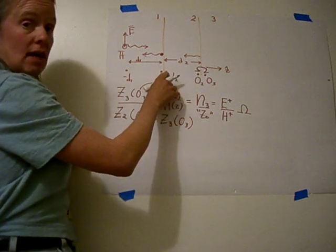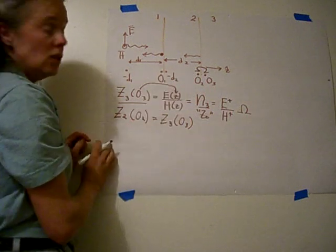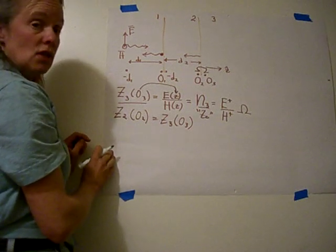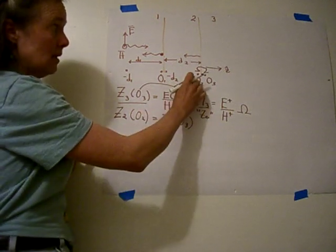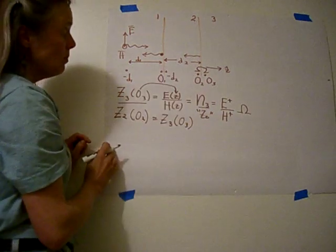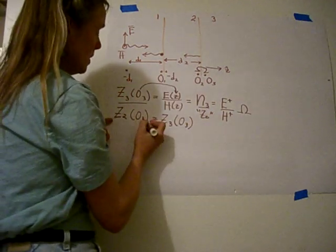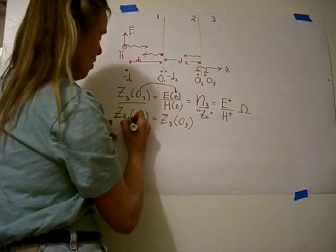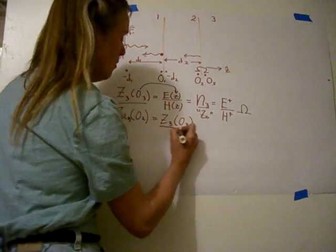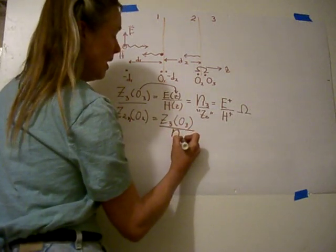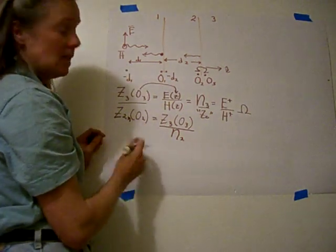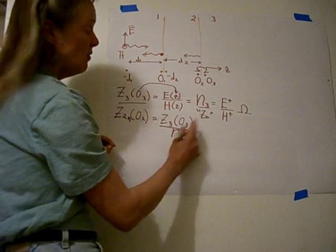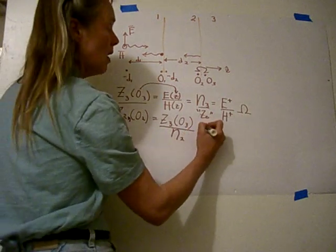But we'd like to get over here to minus d2, and we're going to do that using a Smith chart. If we want to use a Smith chart, we have to normalize z2 at O2 in order to plot it. So z2 at O2, which equals z3 at O3, normalized by dividing by eta2 — where eta2 is like z0 for region number two — gives us a normalized value that we can plot on the Smith chart.